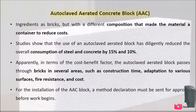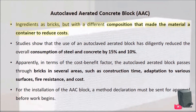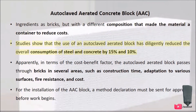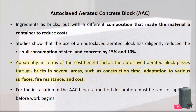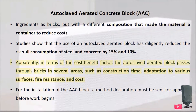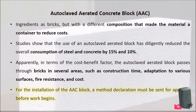Autoclaved Aerated Concrete Block (AAC): Similar ingredients to bricks but with a different composition that makes the material lighter to reduce costs. Studies show that the use of an autoclaved aerated block has reduced the overall consumption of steel and concrete by 15% and 10% respectively. In terms of the cost-benefit factor, the AAC block performs better than bricks in several areas such as construction time, adaptation to various surfaces, fire resistance, and cost. For the installation of the AAC block, a method declaration must be sent for approval before work begins.